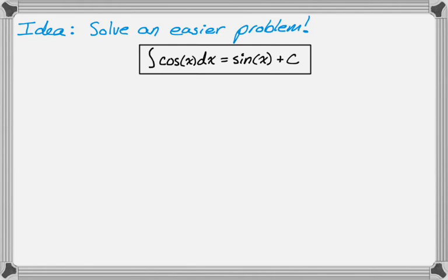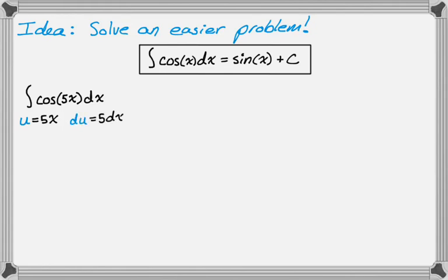A lot of problems look similar to this, but with a little difference. For example, if we had the integral of cosine of 5x dx, that's basically the same problem, and we can make it the same problem with substitution. So I'm going to say that u is equal to 5x, and I'm going to rewrite the entire thing in terms of u, which means that dx has to be substituted. If u is equal to 5x, then du would be 5 dx, so dx is 1/5 du.